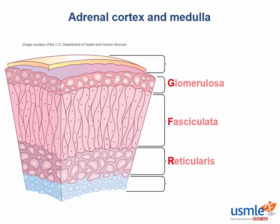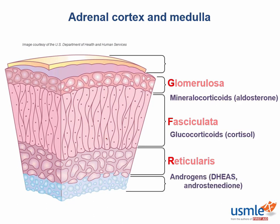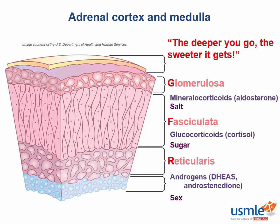These zones are responsible for the production of mineralocorticoids, glucocorticoids, and weak androgens, respectively, which regulate salt, sugar, and sex. They say the deeper you go, the sweeter it gets — because sex is hilarious. But real talk, the activity of these hormones is a lot more complicated than just salt-sugar-sex, so we'll go into them in a lot more detail in the physiology section.